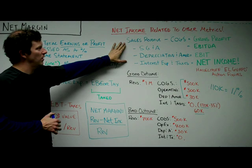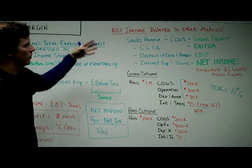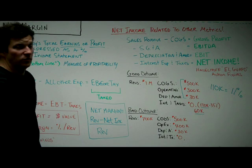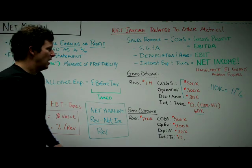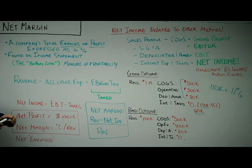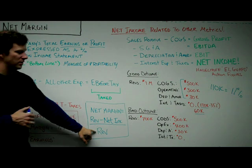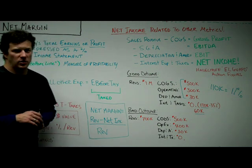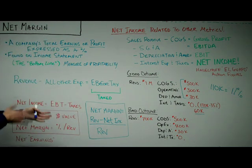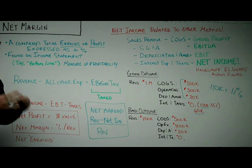As a refresher, this section covers net income related to other metrics — you can freeze the video and take a look at that. The key difference between net margin and net income is that margin is expressed as a percentage relative to total revenue. So: margin equals a percentage; net profit equals a dollar value; net income equals an amount of money. Net margin is the percentage in relation to total revenue.